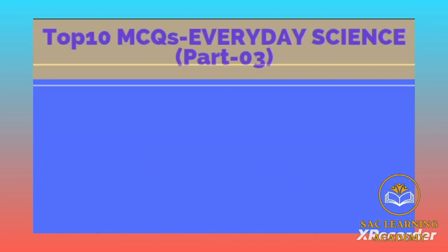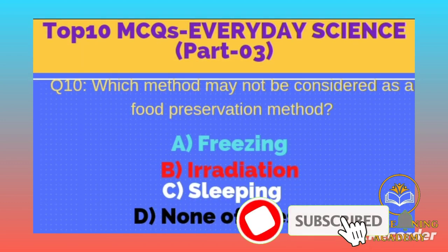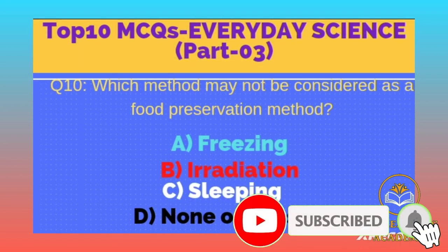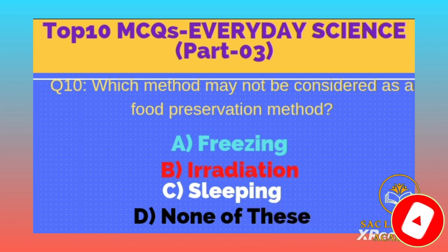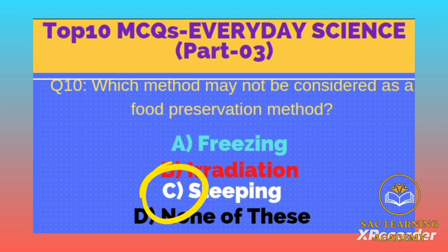Question number 10 and last from AFD Science Part 3: Which method may not be considered as a food preservation method? Option A: freezing, B: irradiation, C: sleeping, D: none of these. Correct option is C, sleeping. Thanks for watching.